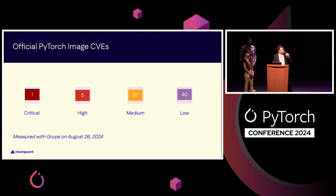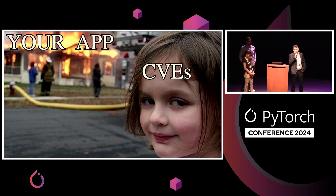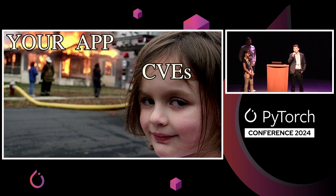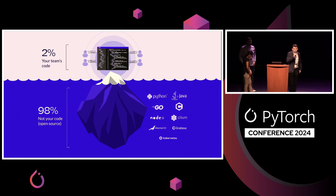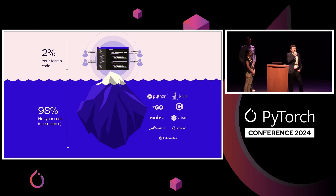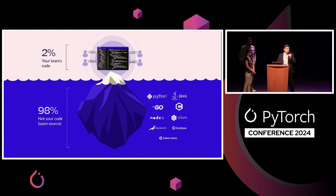CVEs — common vulnerabilities and exposures — are known vulnerabilities in software that affect its security posture. They can be looked up in a database. These are vulnerabilities that can, should, and in some cases must be remediated — for example, for FedRAMP compliance you need to fix them within a month. There's also an upstream problem: if you're running inference or developing an application, probably about two percent of the CVEs in that production deployment might be introduced by your team. The rest come from upstream — whether language runtimes or the OS. As the person at the end of that chain, you're responsible, but fixing all of it becomes very difficult and requires dedicated CVE remediation teams.